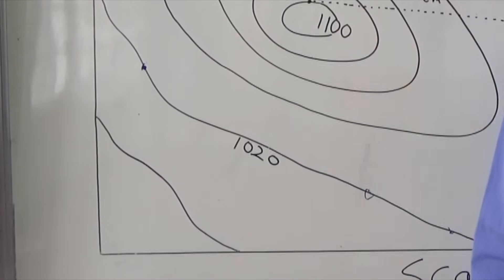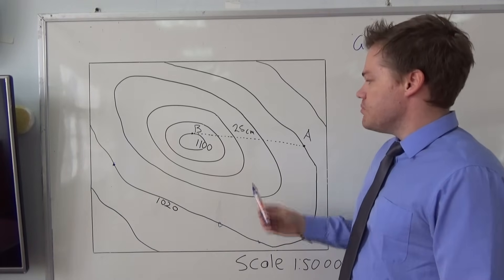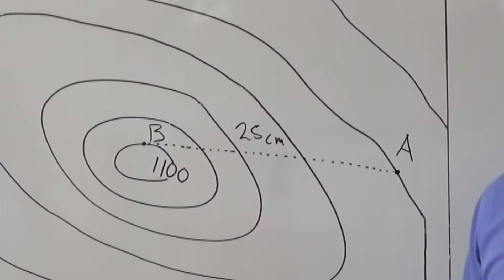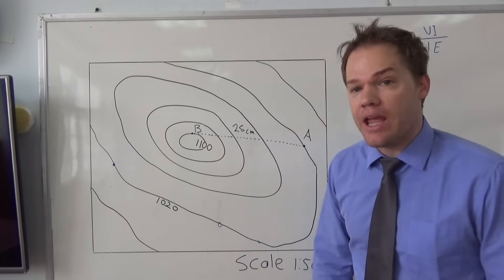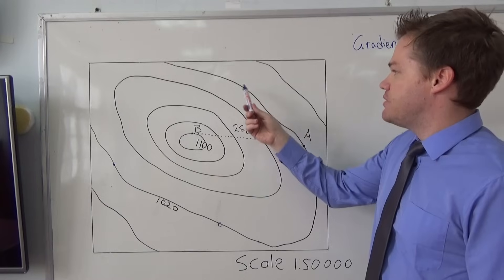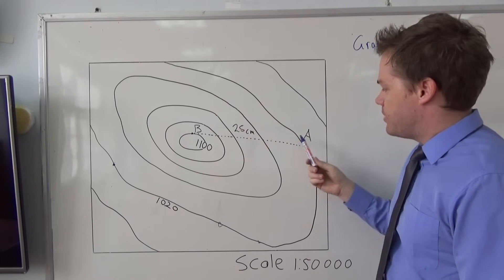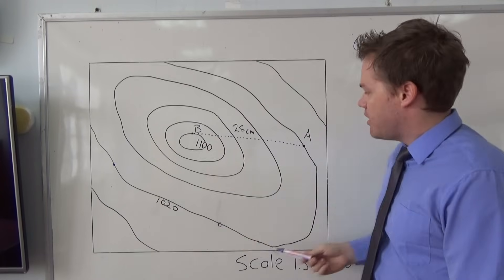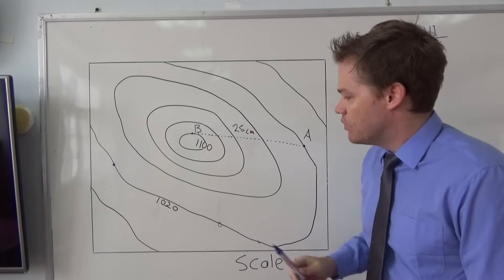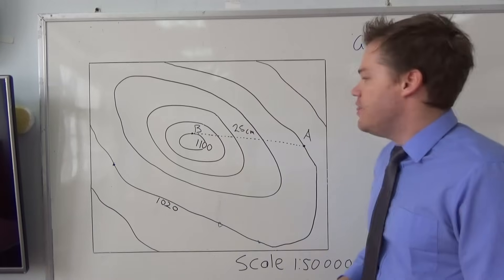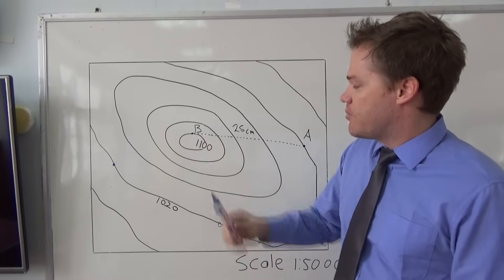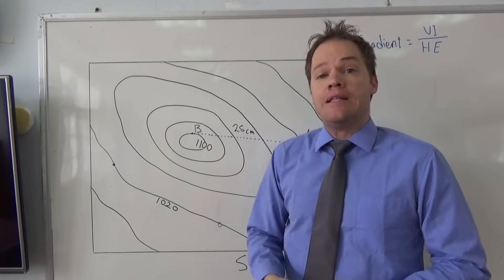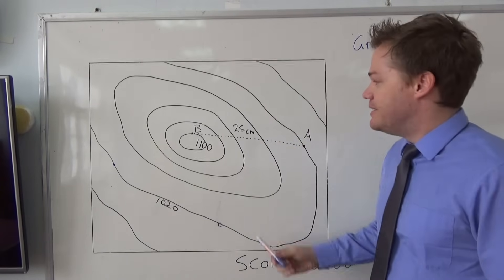1020 meters above sea level. So your teacher might ask you to calculate the gradient between point A and point B. Now first thing you need to know is what is the height of point A. There are no numbers on the side of the map, but if you just trace this line, you'll see that it's 1020 because every place on this line is 1020. So that's your first number, 1020 meters. And then you want to know what is the height of this specific place over here, and you'll see that it's 1100 meters above sea level.